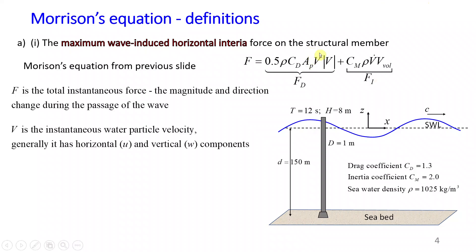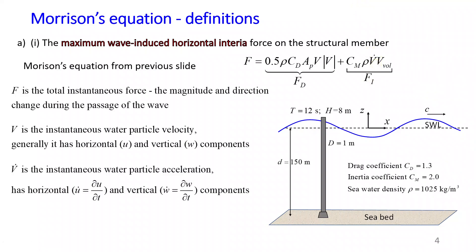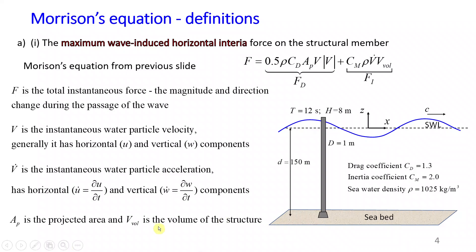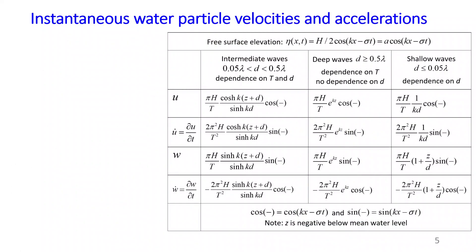Uppercase V is the instantaneous water particle velocity, which has two components: horizontal U and vertical W. Uppercase V with a dot on top is the instantaneous water particle acceleration, which also has two components: horizontal U-dot and vertical W-dot. AP is the projected frontal area of the structure, usually taken as diameter multiplied by height of the structure. V with the index 'wall' is the volume of the structure. To calculate the maximum wave-induced horizontal inertia force, we need equations for velocity and also for acceleration.